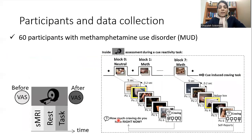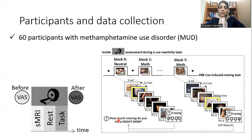We collected MRI data including structural MRI, resting-state fMRI, and task-based fMRI from 60 participants with methamphetamine use disorder. Craving scores based on the REST score were collected immediately before and after the scanning session. During resting state, participants only looked at a cross on the screen, and during task-based fMRI, participants were exposed to drug versus neutral cues based on a standard drug cue reactivity test with block design.